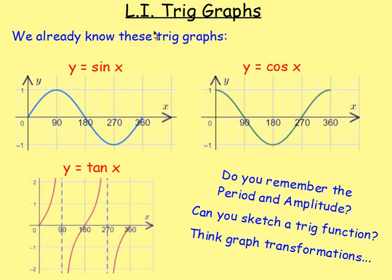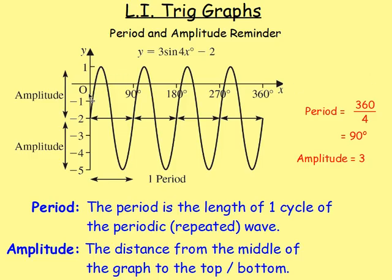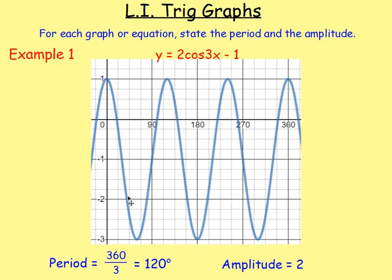After that, we moved on to trig graphs — sine x, cos x, and tan x. We looked at the period and the amplitude. Remember: the period is the length of one cycle of the periodic (repeated) wave, and you find it by doing 360 divided by the number in front of x for sine or cos. The amplitude is the distance between the middle of the graph and the top. We also looked at examples where the graph was drawn out and we had to work out the period and amplitude either from the graph or from the equation.